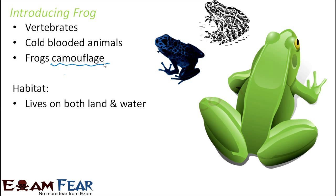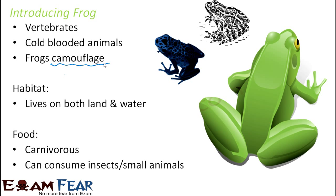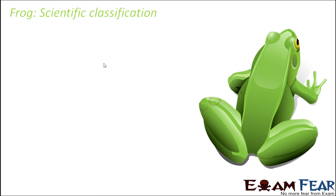Talking about habitat, frogs live on both land and water, and that is why they are often known as amphibians. Amphibians are animals which can live both on land as well as in water. As for food, they are carnivorous — that is, they eat flesh. They can consume insects or small animals. That is a brief introduction to frog.